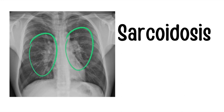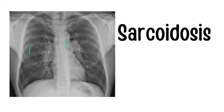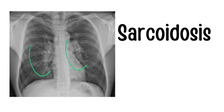Sarcoidosis is extremely high yield. Have a high clinical suspicion in an adult African-American female with cough and dyspnea. The chest x-ray shows hilar lymphadenopathy, which can be described as mediastinal fullness, and scattered reticular opacities in the upper lobes. Sarcoidosis also includes non-caseating granulomas, hypercalciuria, and hypercalcemia.